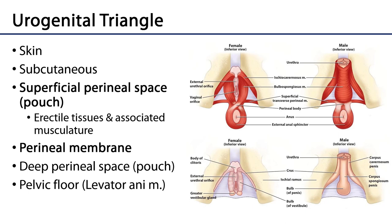The urogenital triangle, to review, is the portion of the perineum which is bounded by the ischiopubic rami and separated from the anal triangle by the inter-ischial line.